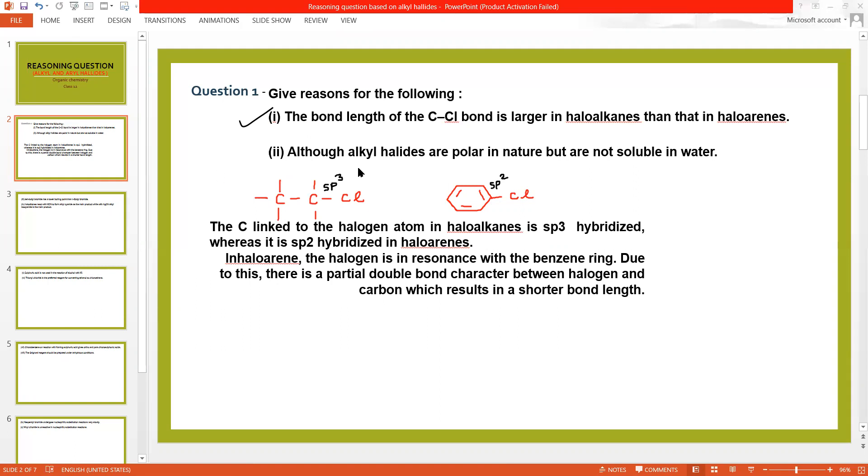Now come to second reason. Although alkyl halides are polar in nature but are not soluble in water. Why? As you can see in alkyl halide, chlorine is more electronegative than carbon. Therefore bond pair will shift towards chlorine, creating delta negative charge over chlorine and delta positive on alkyl group.